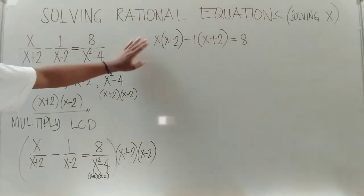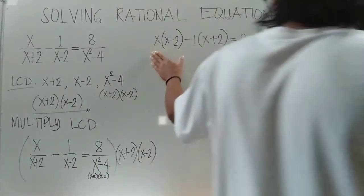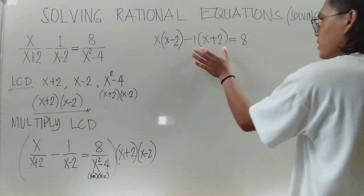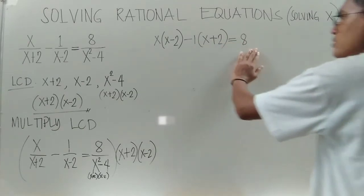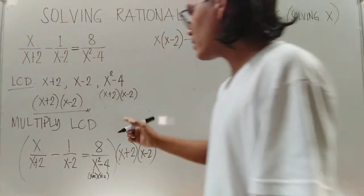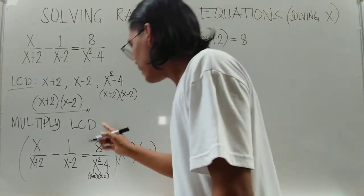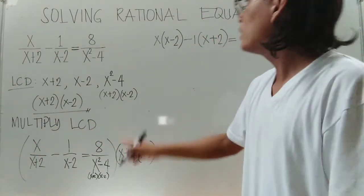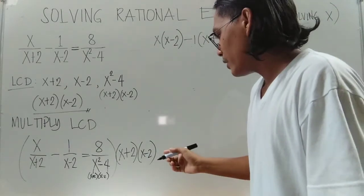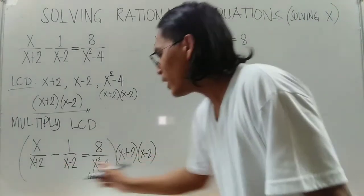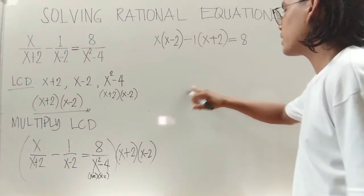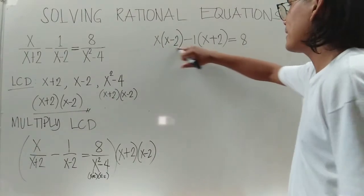So as you can see, we have: x times the quantity (x minus 2) minus 1 times the quantity (x plus 2) equals 8. We now have no denominator — that is the reason why we multiply the LCD to our whole rational equation, to eliminate all denominators and solve more easily.